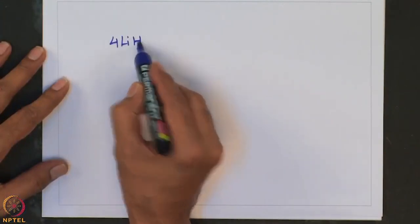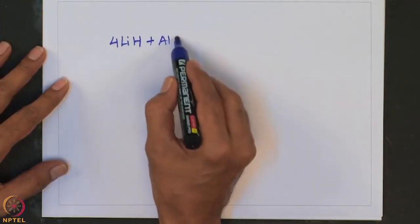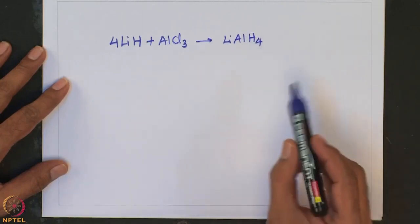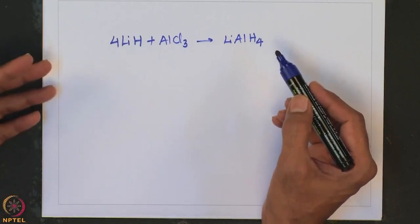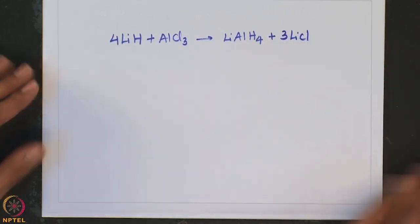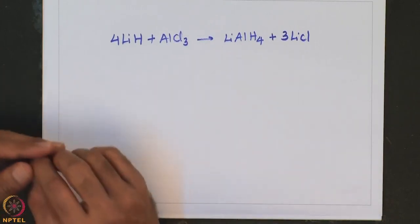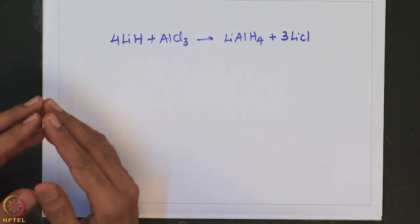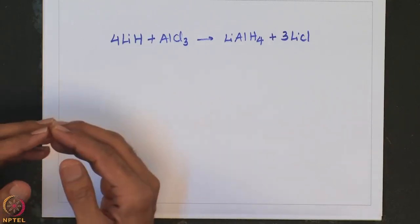Lithium hydride can also be used to make other reducing agents. When lithium hydride is treated with aluminum trichloride, it leads to the formation of lithium aluminum hydride (LiAlH4). Lithium aluminum hydride is a very important reagent to reduce or convert many of the main group halides to the corresponding hydrides. For example, LiAlH4 treated with tetrachlorosilane forms silane (tetrahydrosilane). Similarly, LiAlH4 can also be used to make P-H bonds from P-Cl bonds.